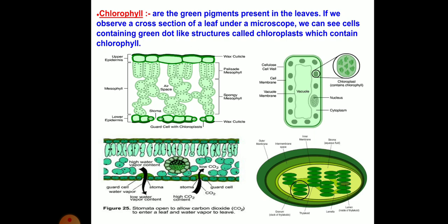Stomata are guarded by guard cells and due to water pressure they get open. Where there is high water vapor content inside and low water vapor content outside, stomata open. When open, stomata allow carbon dioxide to enter and water vapors to leave.